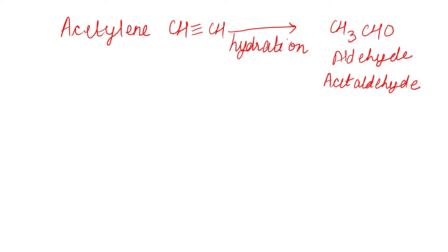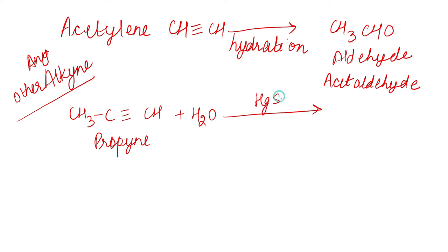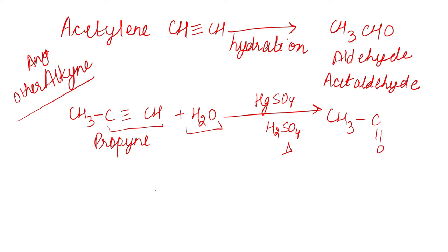Except for acetylene, agar hum kisi bhi alkyne ki hydrolysis karvayenge, toh kya hoga — for example if we consider propine, hydrolysis karvay in the presence of HgSO4 along with H2SO4 and heat kiya, a ketone will be formed. Now amongst the two carbon atoms linked to the triple bond, water ke two hydrogens us carbon atom pe jayenge jis ke paas already zyadha number of hydrogen atoms hain.